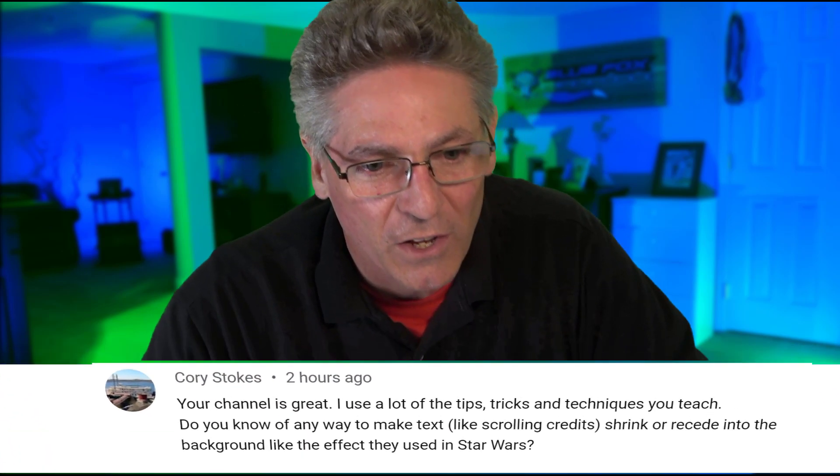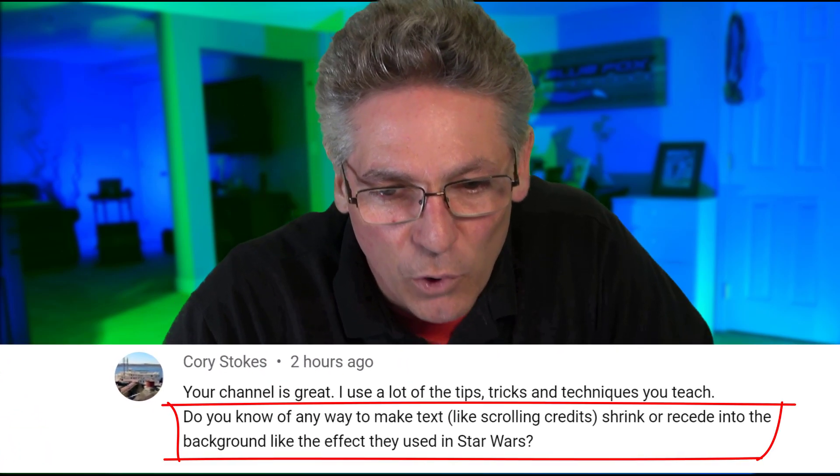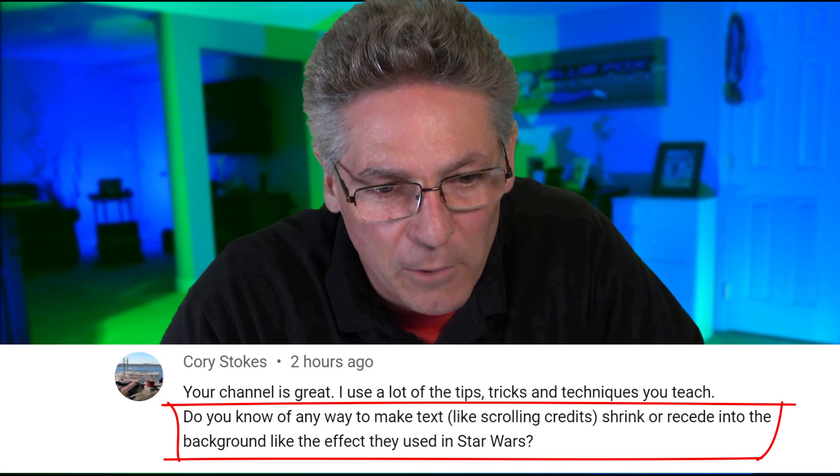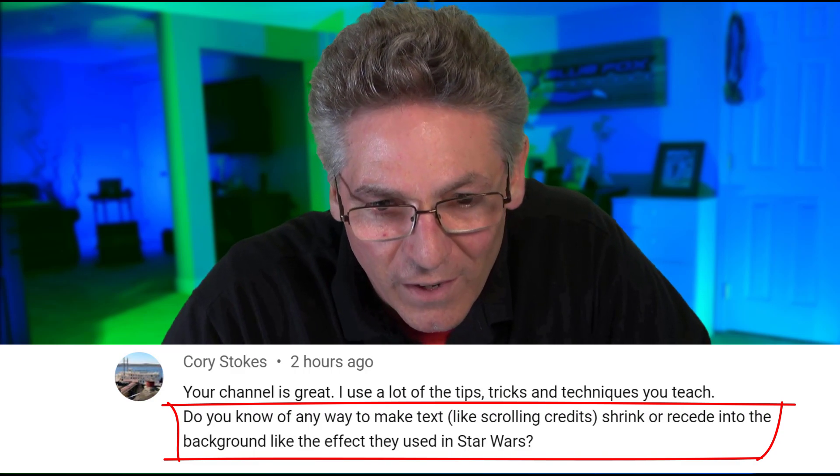A friend of the channel named Corey Stokes had a wicked cool idea for a tutorial. In comments he posted this question: do you know of any way to make text like scrolling credits shrink or recede into the background like the effect they used in Star Wars? What Corey is talking about is that famous text crawl where the text sort of goes into the horizon at the start of every Star Wars movie.